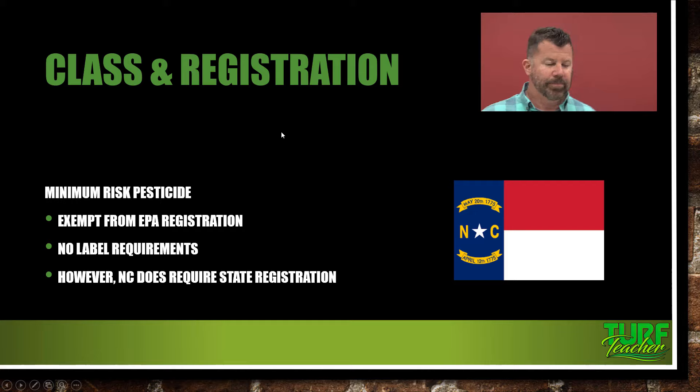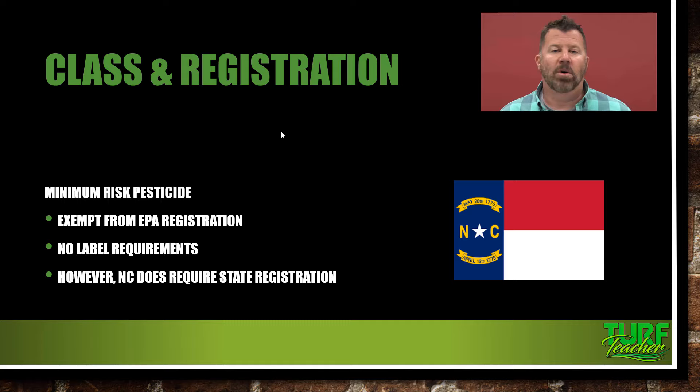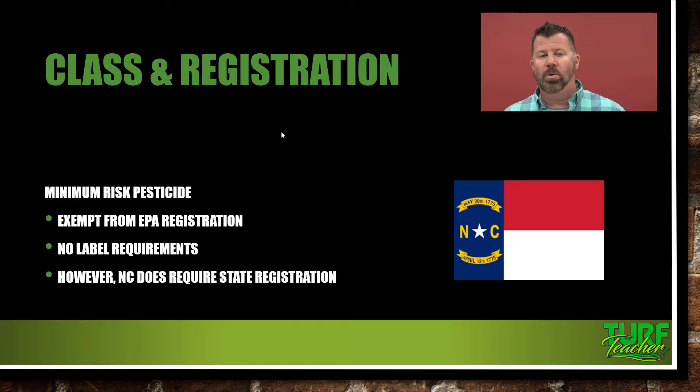Your minimum-risk pesticide is exempt from EPA registration — it does not have to be certified for sale by the EPA. But it does have to have North Carolina registration with the North Carolina Department of Agriculture and Consumer Services. There are really no label requirements from the EPA if it is a minimum-risk pesticide. I always think of the homeowner going to a big-box store.